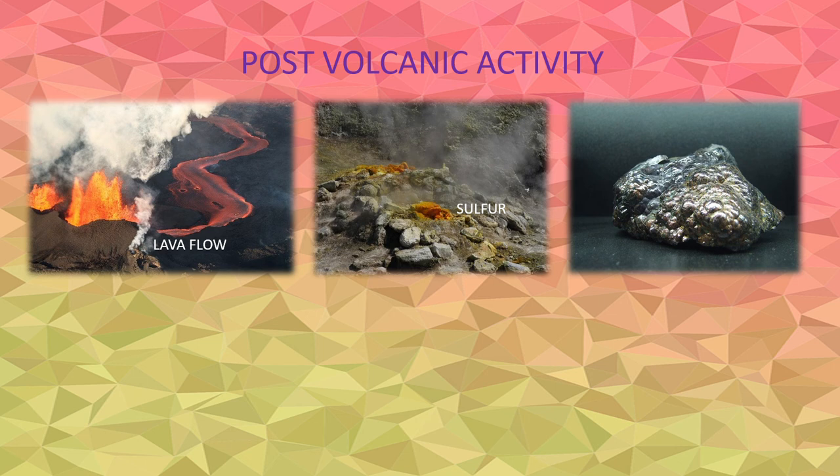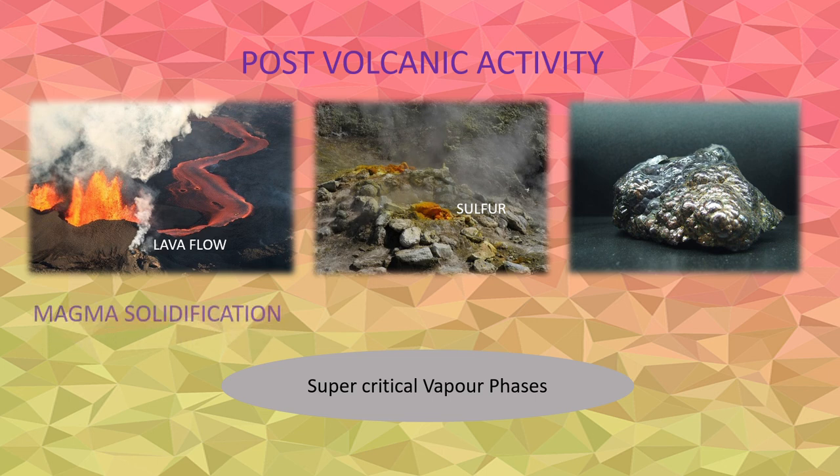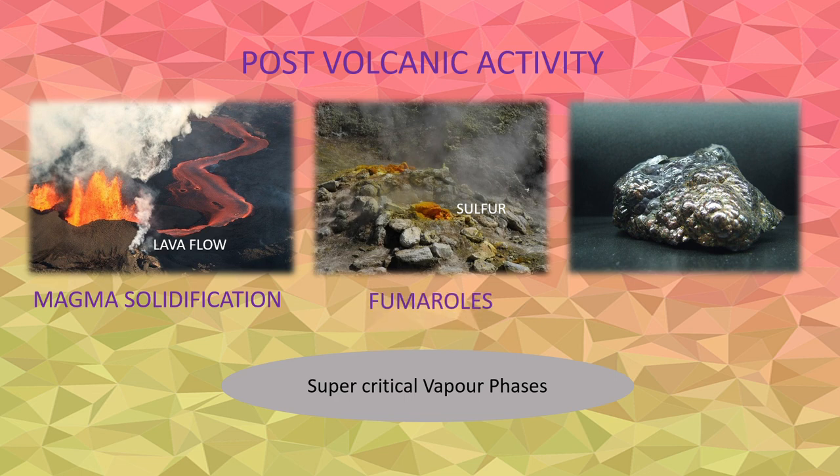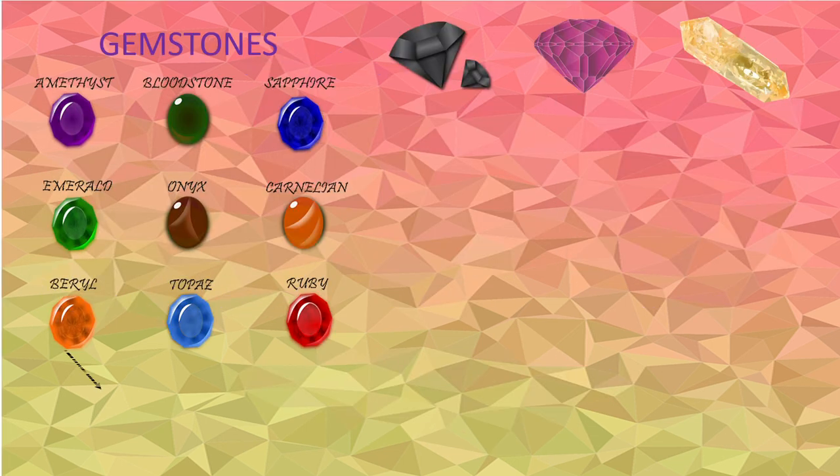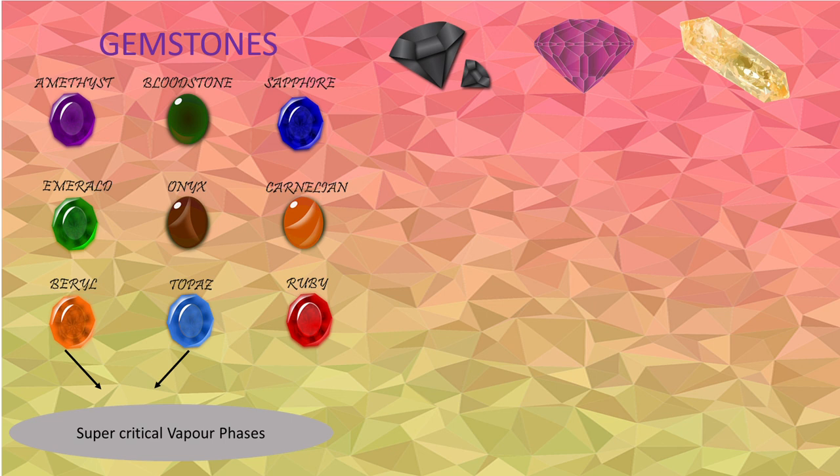Some crystals are formed in supercritical vapor phase concentrated in the final stages of magma solidification. These crystals include hematite, which are mainly formed around fumaroles during the final stage of volcanic activity. Similarly, large and highly perfect crystals of quartz, beryl, and topaz are also formed by vapor growth in the final stage of magma solidification.